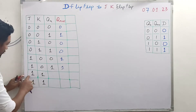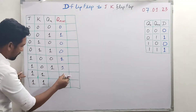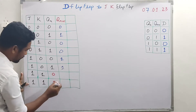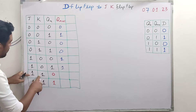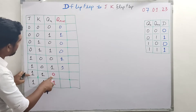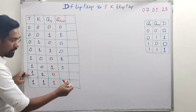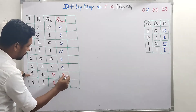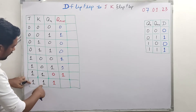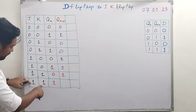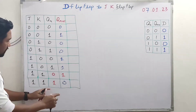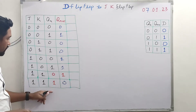When J=1, K=0: the next state is forced to 1 regardless of present state. When J=1, K=1, the JK flip-flop toggles — this is the condition that eliminates the invalid state of the SR flip-flop using feedback. If J=K=1 and present state is 0, next state toggles to 1; if present state is 1, it toggles to 0.